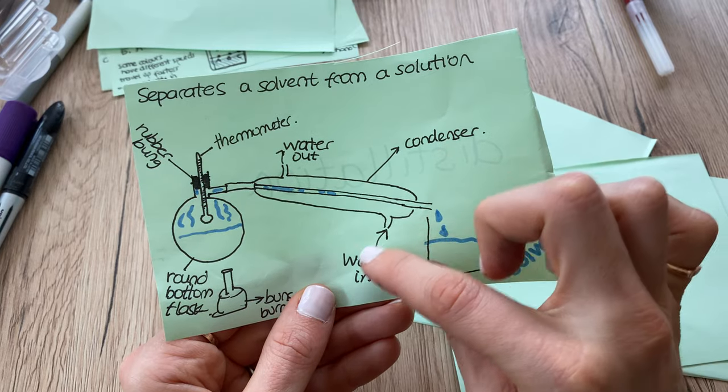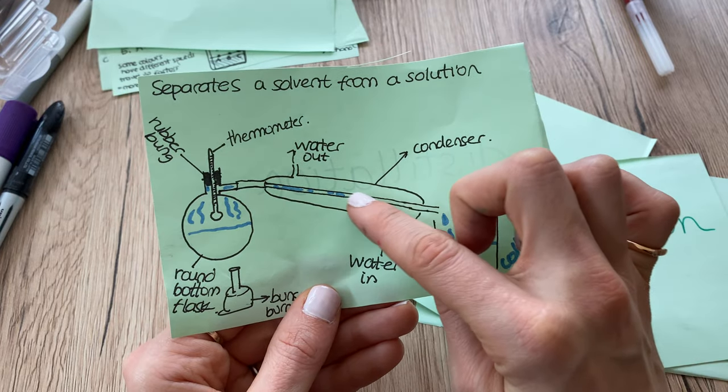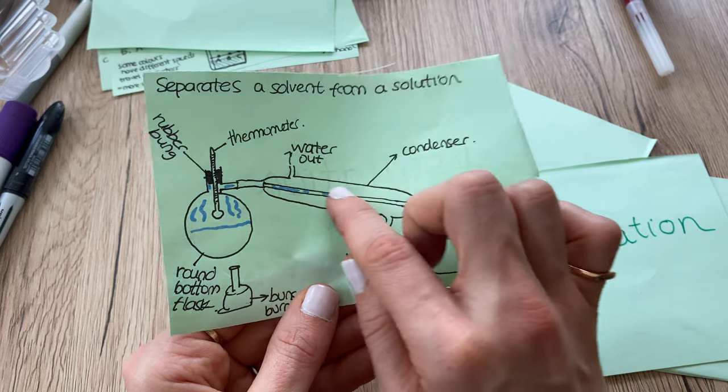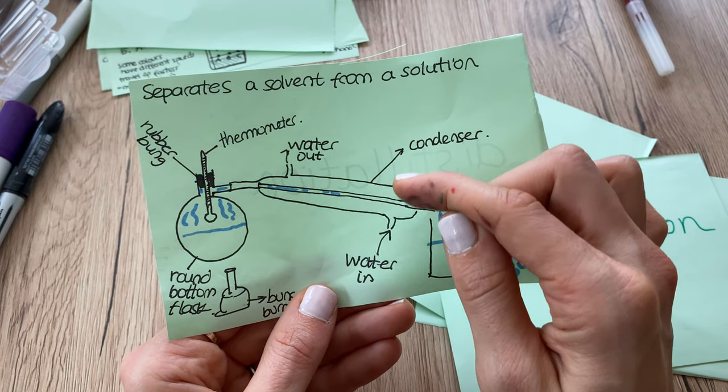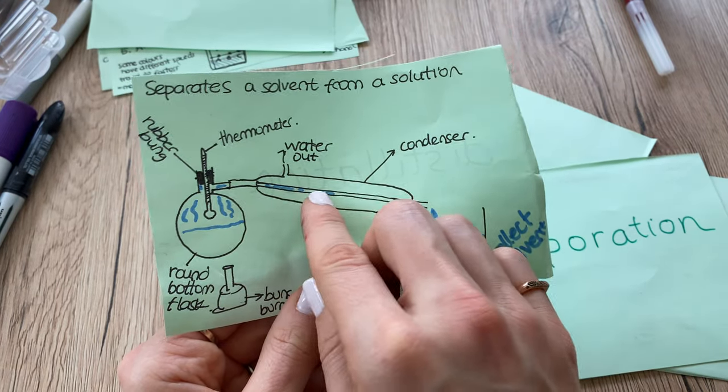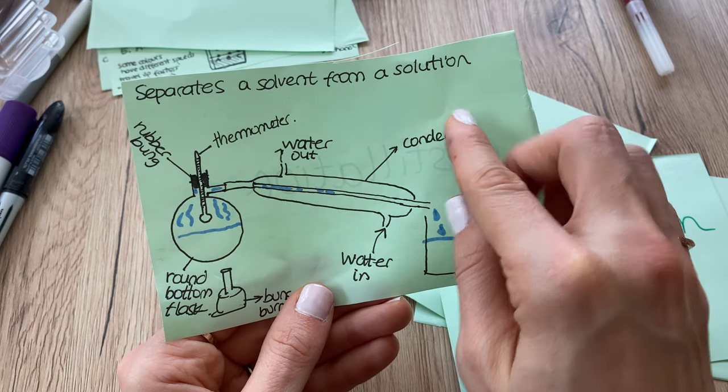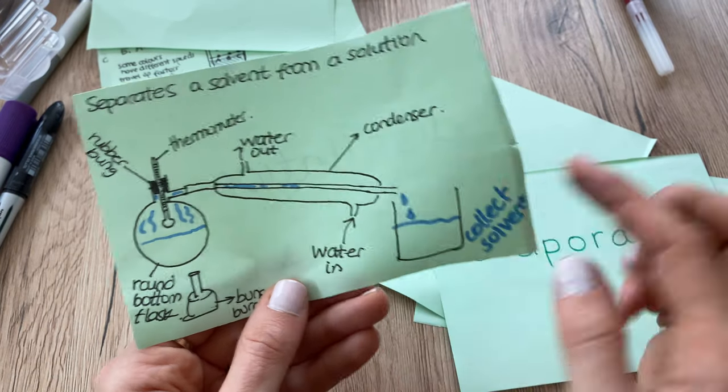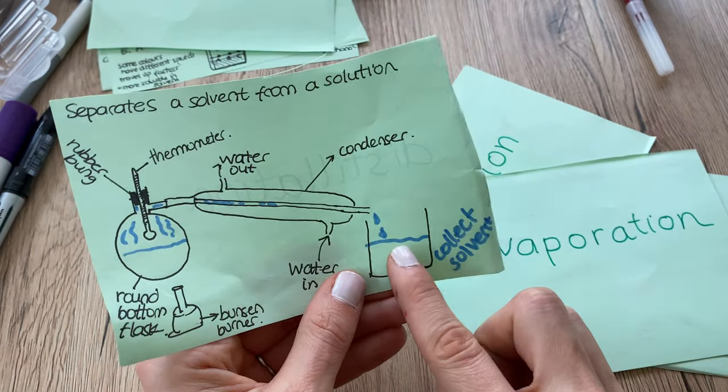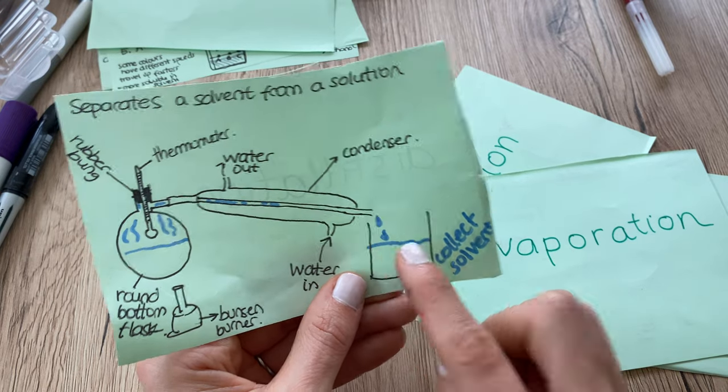The condenser is filled with very cold water surrounding it. It doesn't touch the gas but it's surrounding the tube of the gas, so this gas is going to condense. It's going to turn from gas to liquid and I'm going to end up having my solvent here.